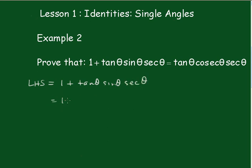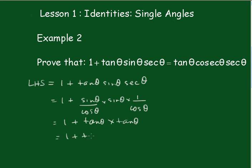LHS = 1 + tanθsinθsecθ = 1 + (sinθ/cosθ) × sinθ × (1/cosθ). This is 1 + tanθ × tanθ, and that's 1 + tan²θ, which is sec²θ.